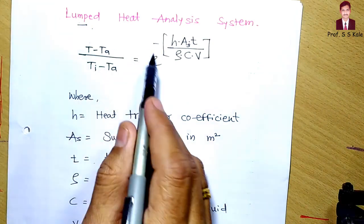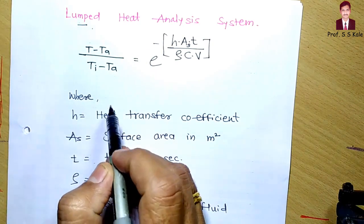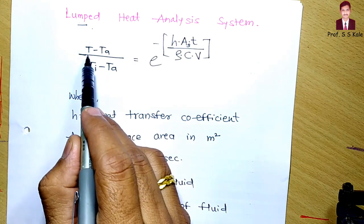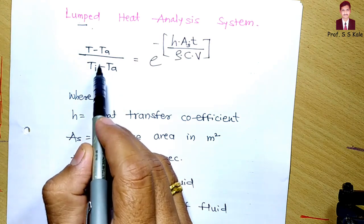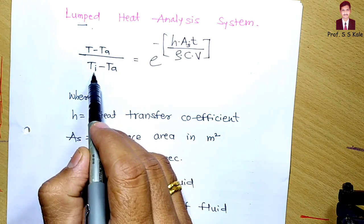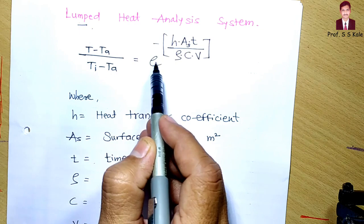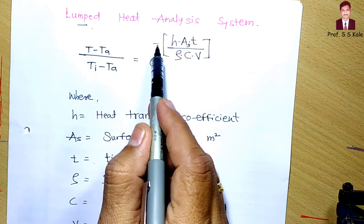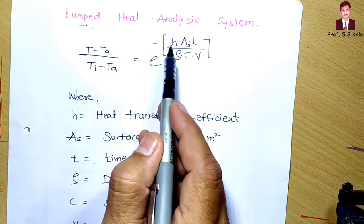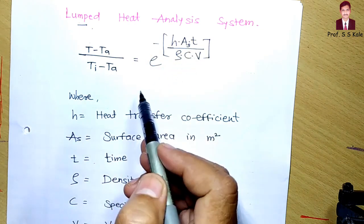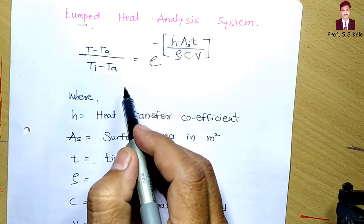The formula used is: (T minus Ta) divided by (Ti minus Ta) is equal to e raised to minus (h·As·t) divided by (ρ·c·V). That is the formula.